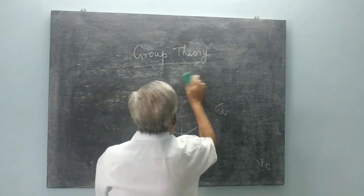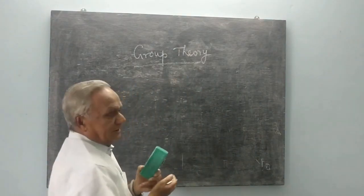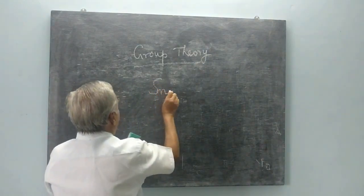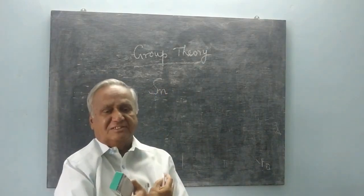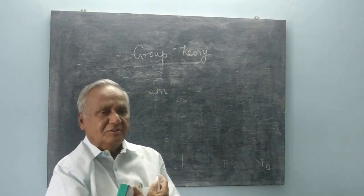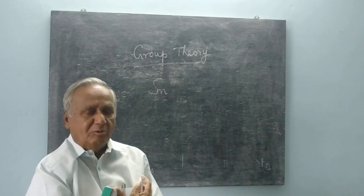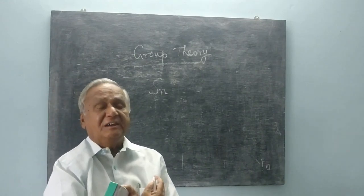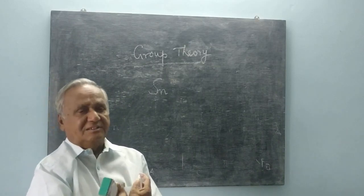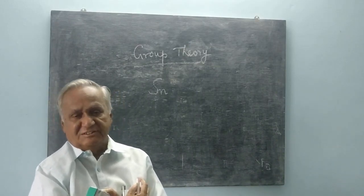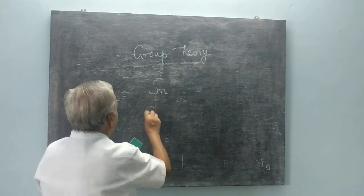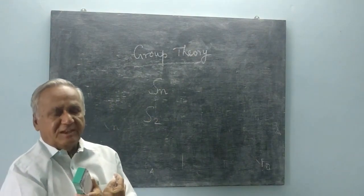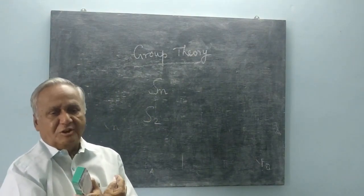Next, we have what is called a rotation-reflection axis. This involves a rotation through a certain angle followed by reflection in a perpendicular plane. If this produces an indistinguishable structure, we call that axis a rotation-reflection axis. S2 means a C2 followed by sigma-H; S4 means a C4 followed by sigma-H, and so on.